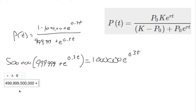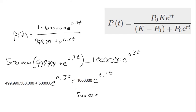Then we've got 500,000 times e to the 0.3t equals, we've got a million e to the 0.3t. And then we want to collect the e to the 0.3 terms on one side. So we'll subtract this 500,000 from both sides. So a million subtracted by 500,000 gives us 500,000.